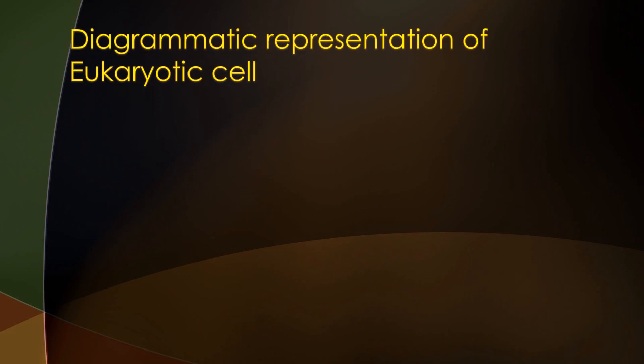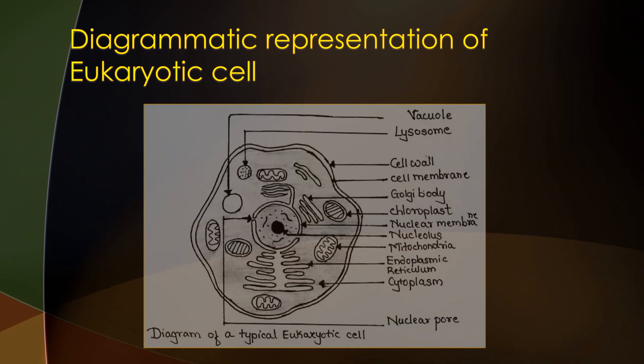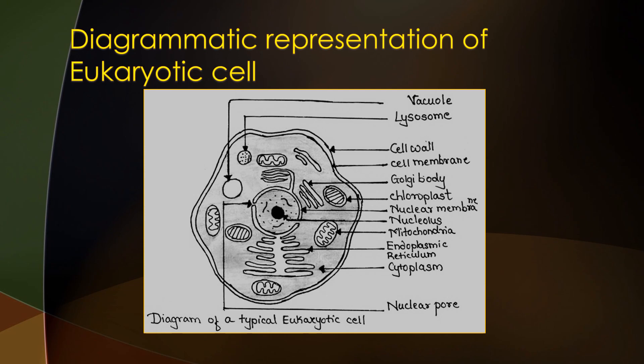With the help of a diagrammatic representation, a eukaryotic cell is shown. The outermost layer is the cell wall, composed of polysaccharides with no peptidoglycan layer. Beyond the cell wall is the cell membrane, which encloses the cytoplasm. Internal organelles dispersed in the cytoplasm include vacuoles, lysosomes, Golgi bodies, chloroplasts, mitochondria, and endoplasmic reticulum. At the center is a nuclear membrane enclosing the nucleolus.